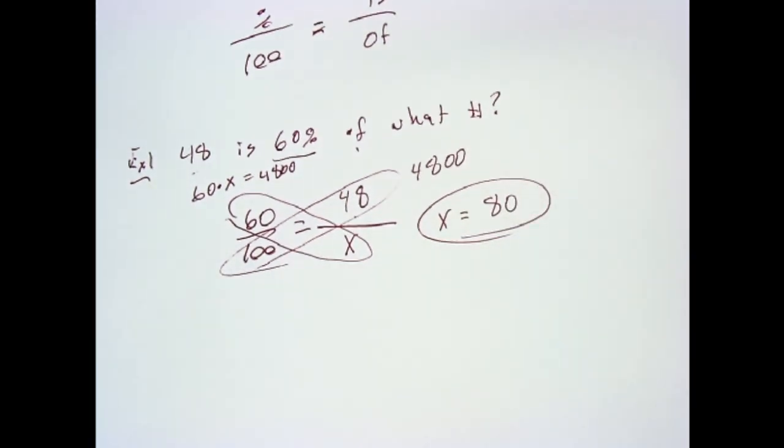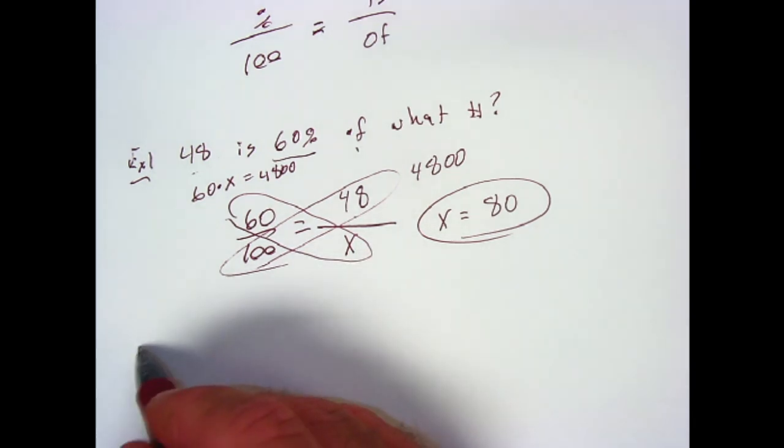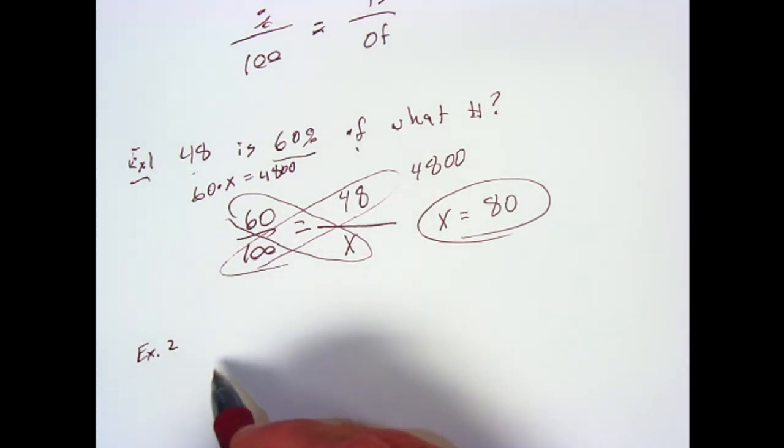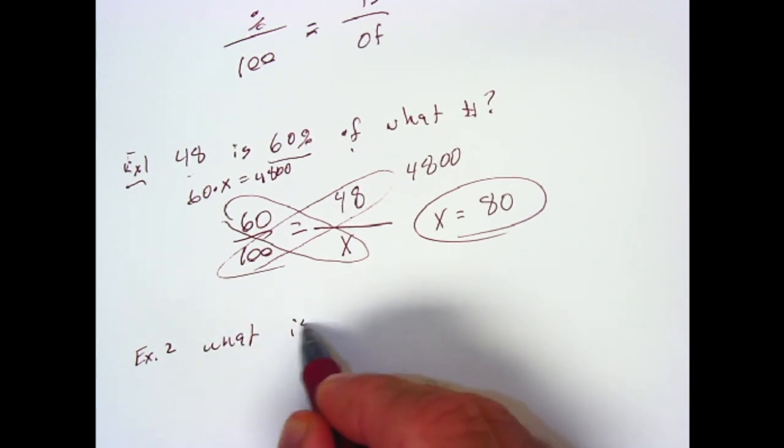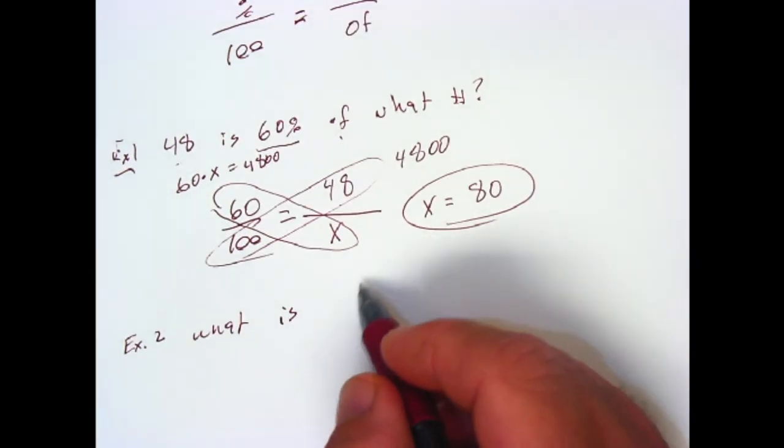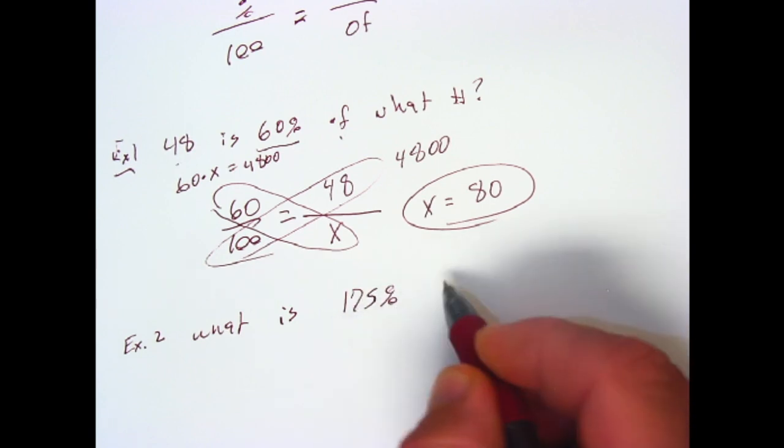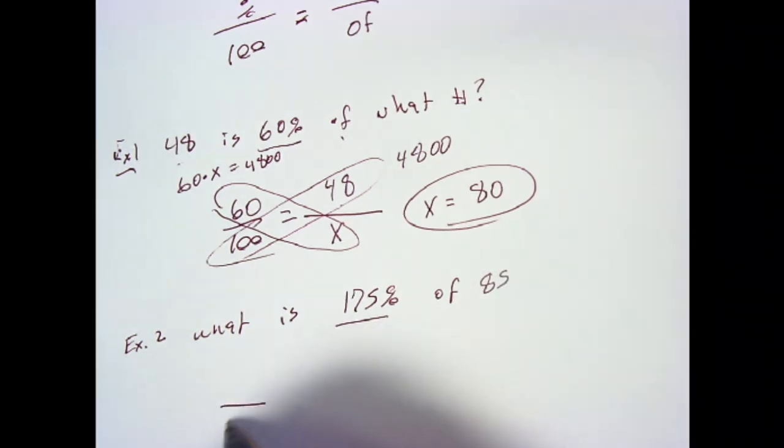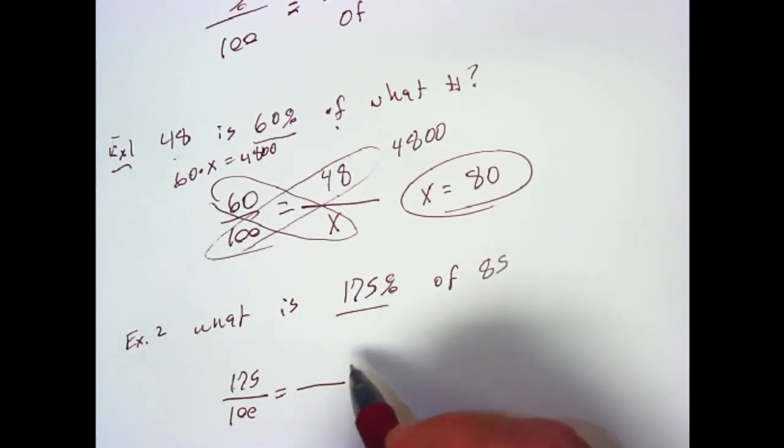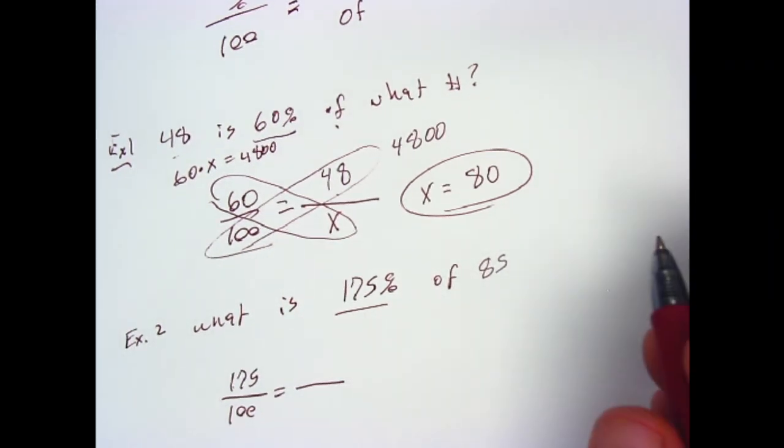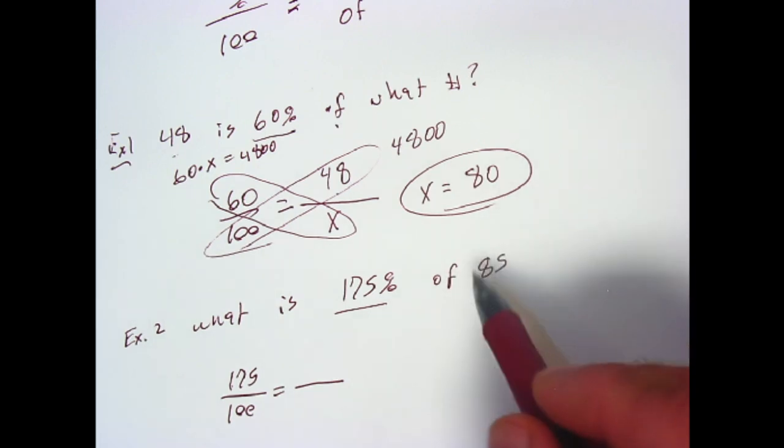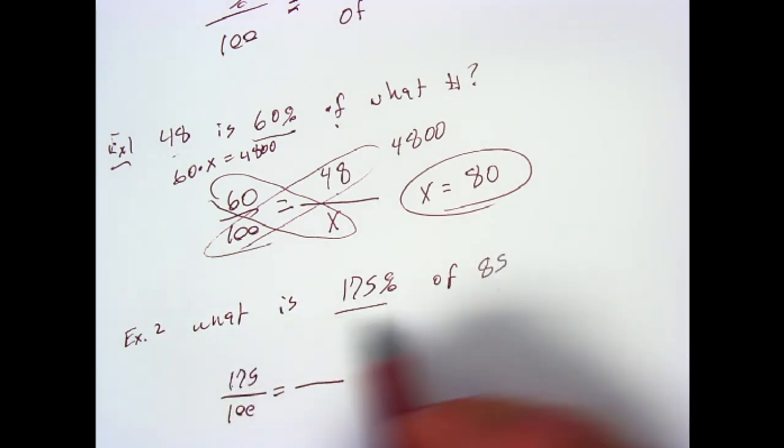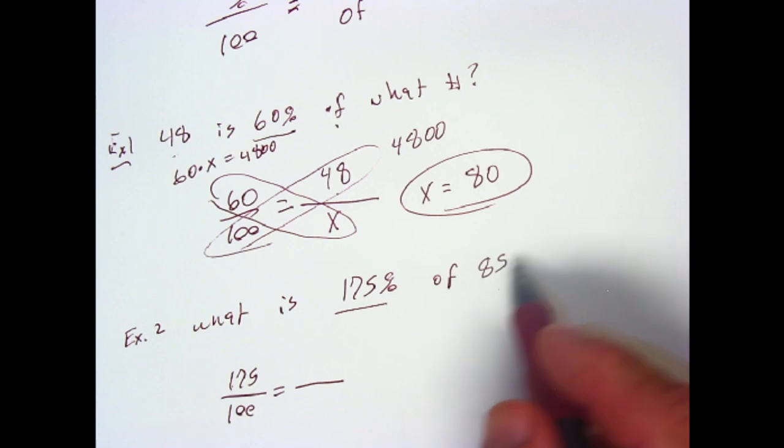Let's check another problem. What is 175 percent of 85? So right off the bat, we see we got a percent. So that's going to be 175 over 100. Now we need to decide what number goes on top, what number goes on bottom. Once again, like I told you, the number after of is the whole. So what is of 85? What is, so that's the x, is of 85.